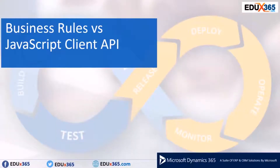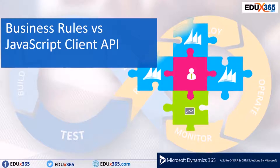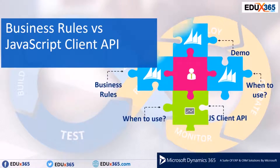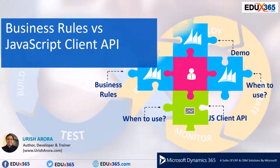Hello everyone. In this video we will be talking about the difference between business rules and JavaScript client APIs. We'll start with discussing what business rules are and when to use them, similarly what JavaScript client APIs are and when to use them, and at the end I'm going to give a brief demo. My name is Yuresh Aurora, you can reach me at yureshaura.com.